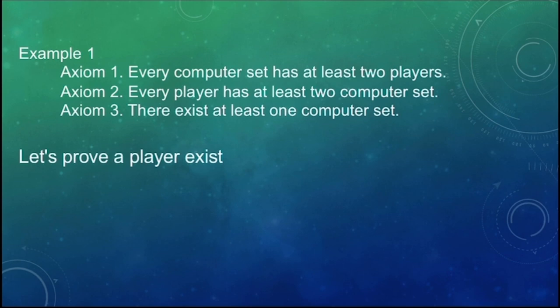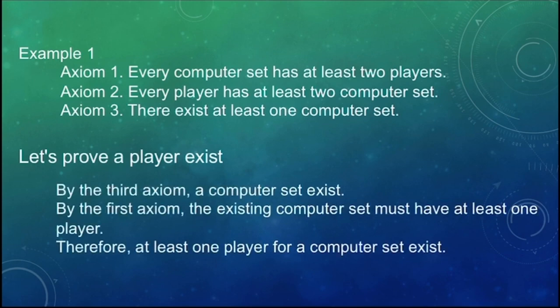So now, let's prove a player exists. By the third axiom, a computer set exists. By the first axiom, the existing computer set must have at least 1 player. Therefore, at least 1 player for a computer set exists. This limited axiomatic system would be enough to build a network of computers to work in a computer shop.